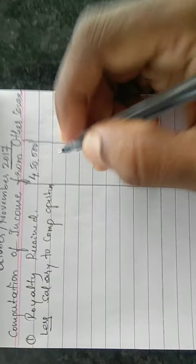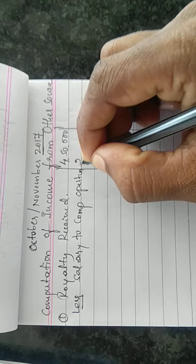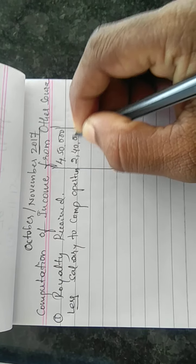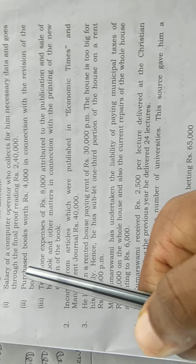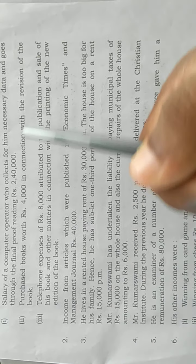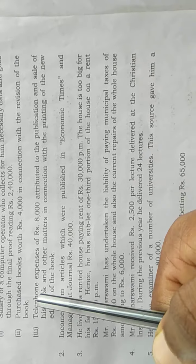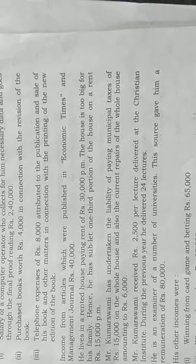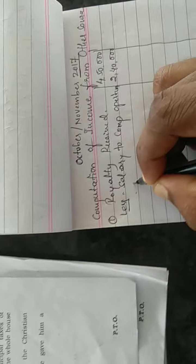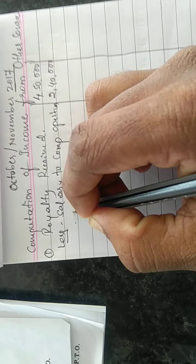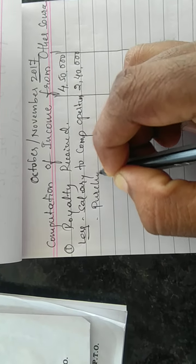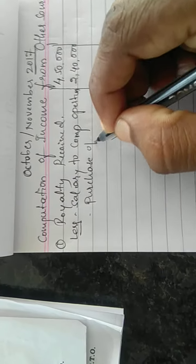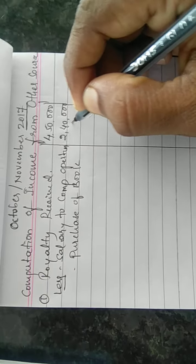Salary to computer operator: two lakh forty thousand. Next expenditure — purchased books worth rupees four thousand in connection with the revision of the book. Purchase of books: four thousand rupees.